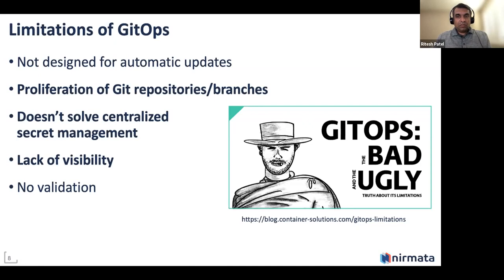Another limitation is when you're managing or trying to deploy an application across multiple clusters — like add-ons, which need to run on every cluster that's deployed. If you need any variations in your manifest, you end up having to create either multiple repositories or branches to change your YAML for those clusters. That becomes challenging because it adds overhead to managing all of those Git repos and branches.